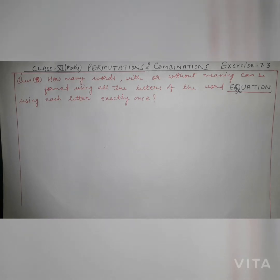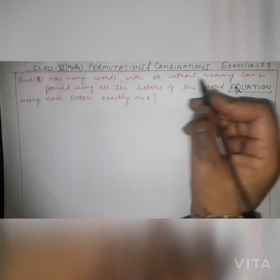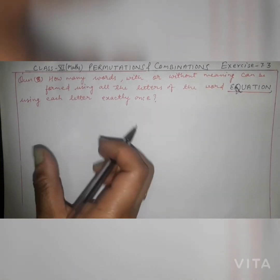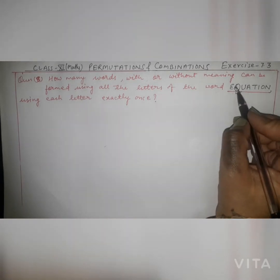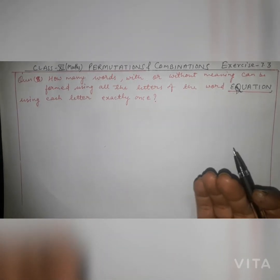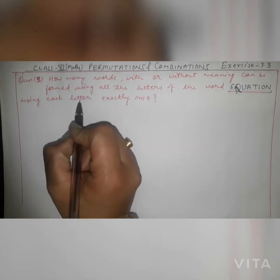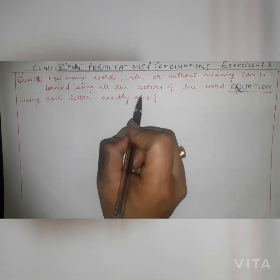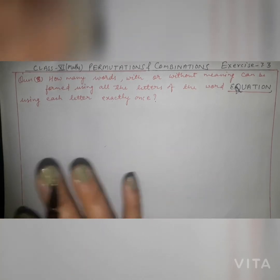Here you are asked how many words, with or without meaning, can be formed using the letters of the word EQUATION, using each letter exactly once. If you have used one letter, it will not repeat. It means that repetitions are not allowed.